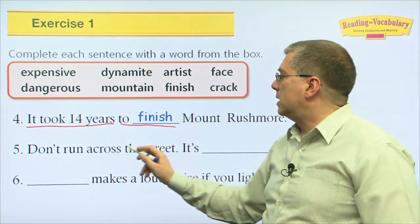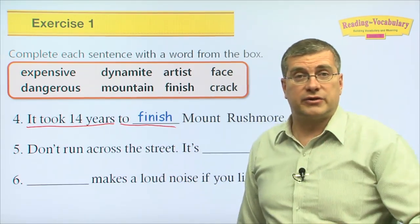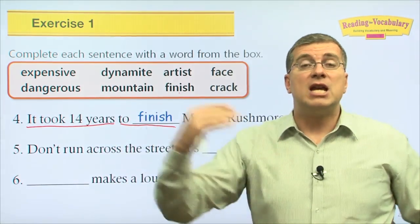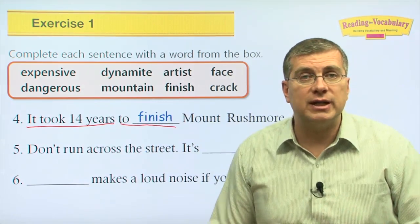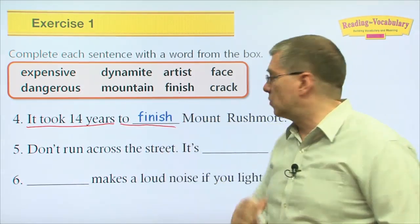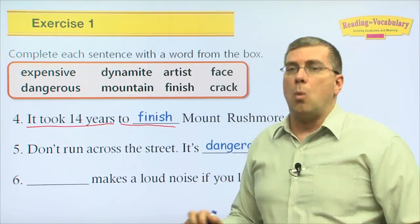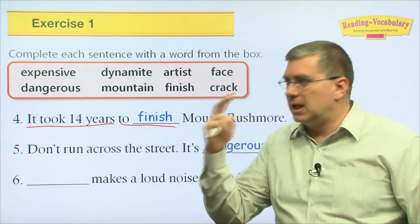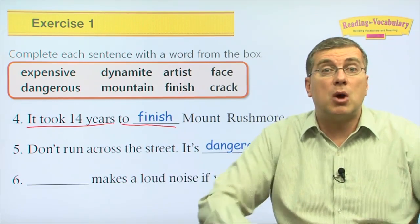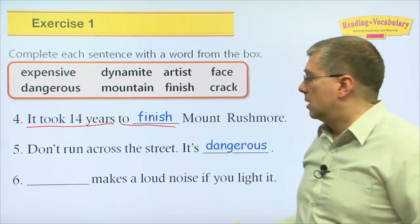Number five — don't run across the street. That's good advice. Why? Because there are cars. If you do that, you could get hurt. It's a situation that can cause harm — it is dangerous. Walk across the street, be careful, look both ways, and cross where you're supposed to cross.